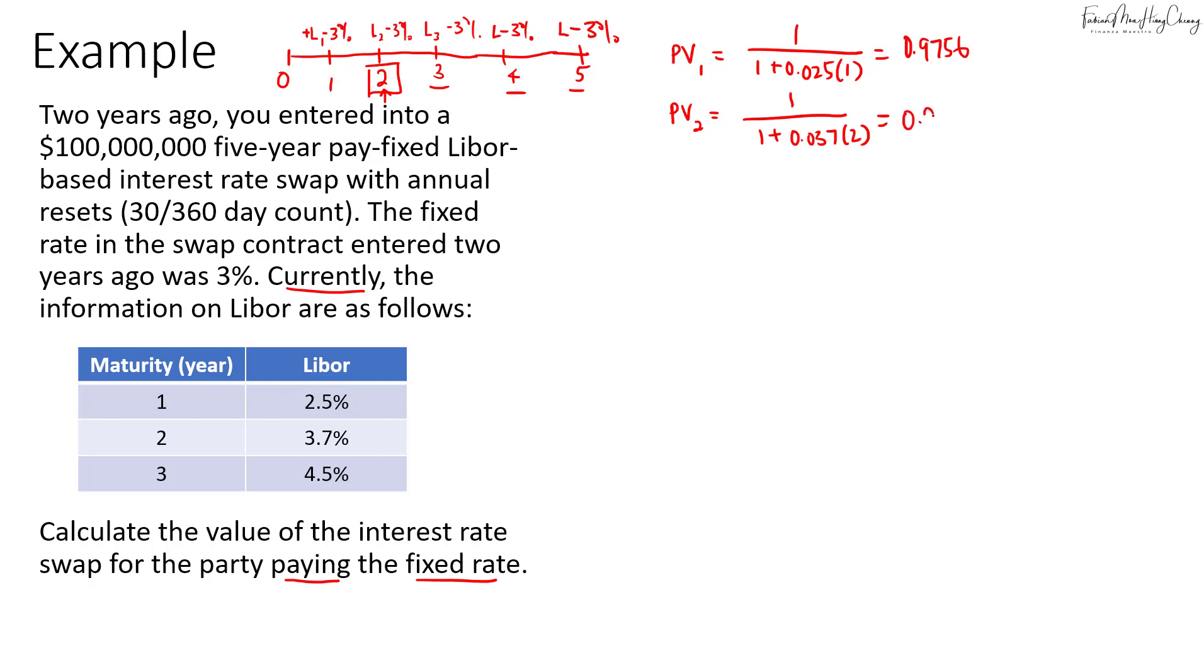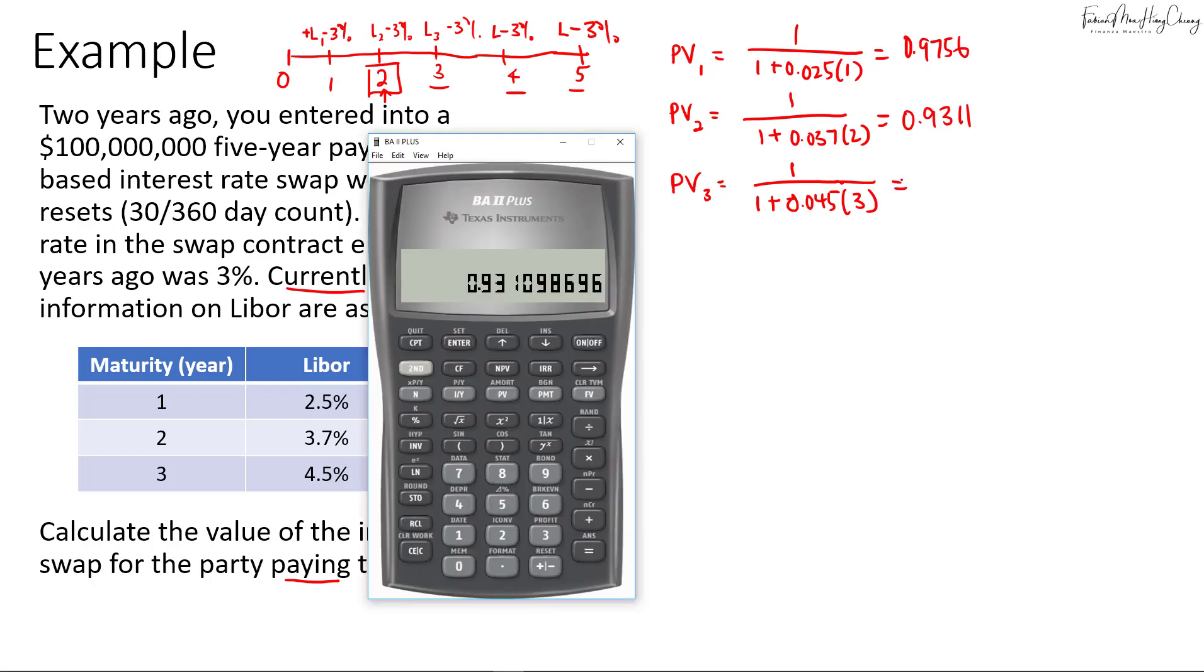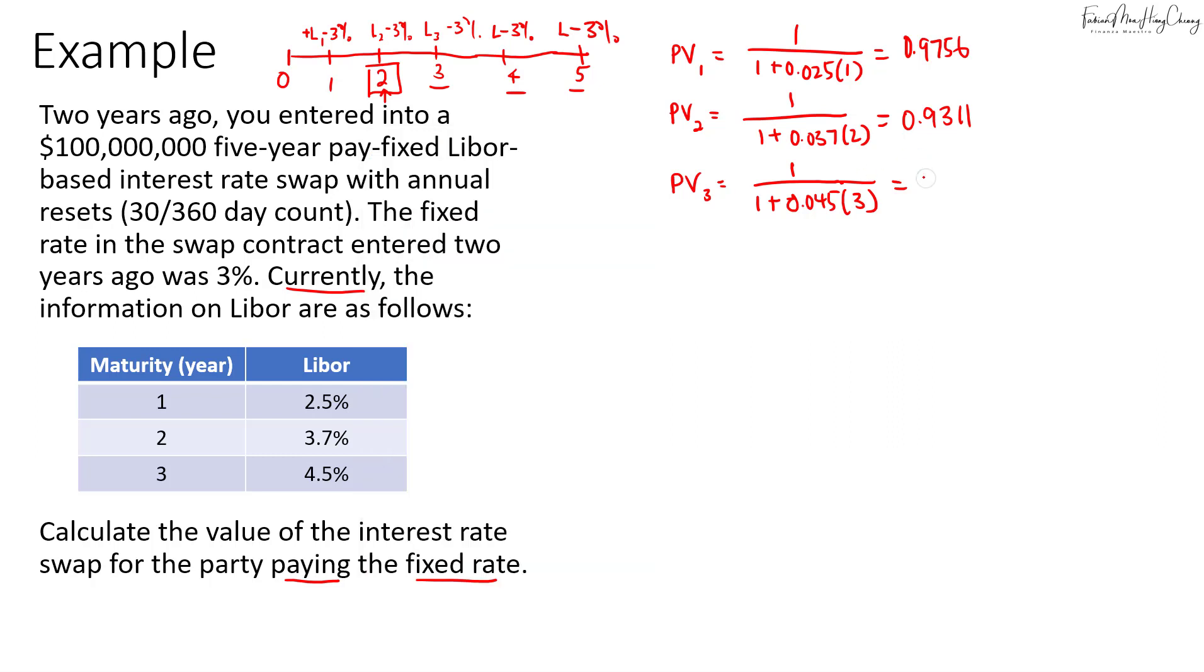And then for the last PV for year 3 that's 1 divided by 1 plus 0.045, 4.5% times 3 years. So that'll be equals to 1 plus 0.045 multiplied by 3, and then we invert it. So that's 0.8811. So let's save that in number 3.